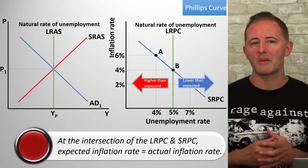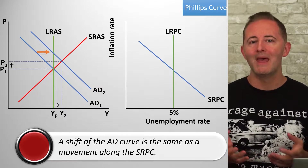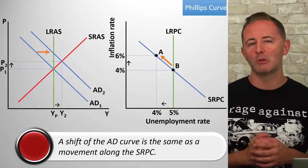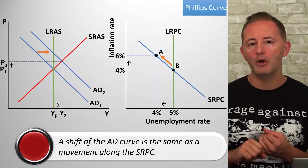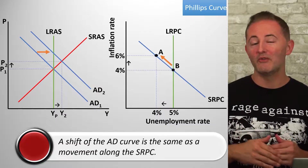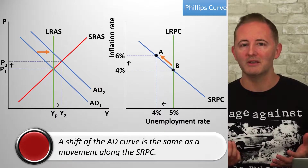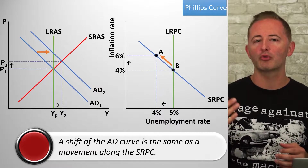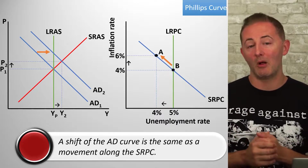Let's talk about movements and shifts of the SRPC, starting with movements. Anything that shifts the AD curve to the right also causes an upward movement along the SRPC. When the AD curve shifts right, we get increased output and prices; the increased output tells us unemployment has fallen. When we move up along the SRPC, we see increased inflation and lower unemployment. If you're already comfortable with your AD shifters, you know everything that will cause an upward movement along the SRPC.